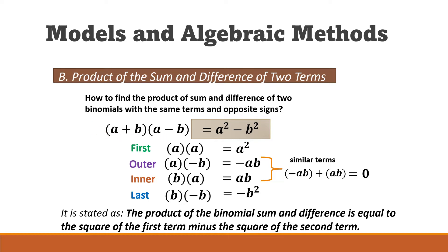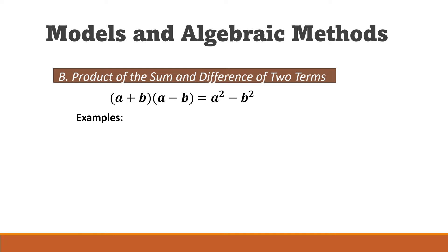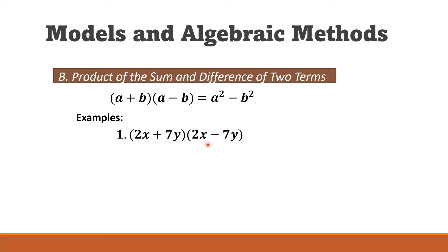Basically, we just square the first term minus the square of the second term. For example, multiplying (2x + 7y)(2x − 7y): they have the same first term 2x and the same second term 7y, with only the operation differing.